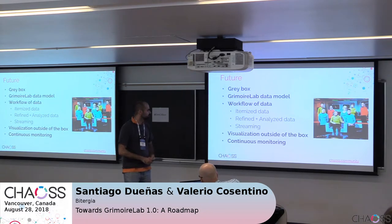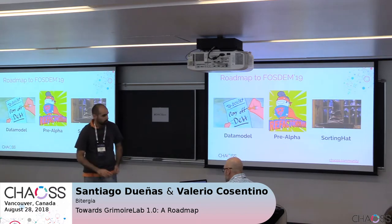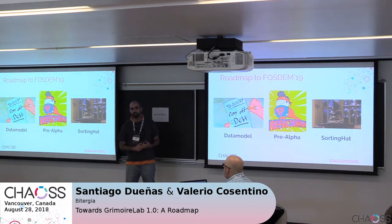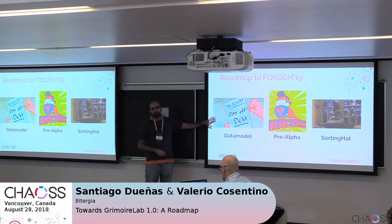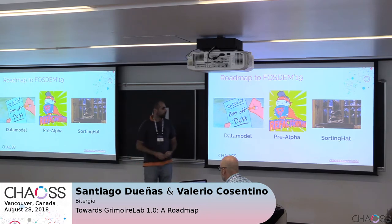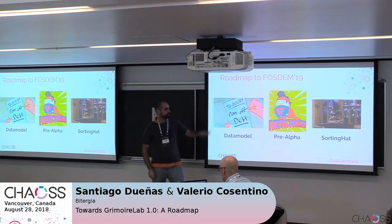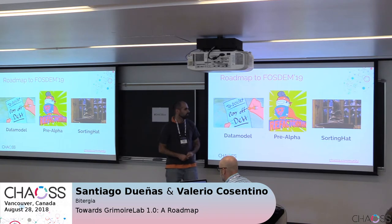Our plans for the rest of 2019 will be: we want to define the data model based on the CHAOSS metrics. We will have a pre-alpha or beta of the platform, and we will improve SortingHat. I will talk more about this later in my workshop.